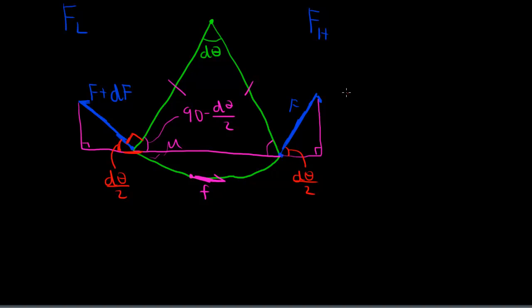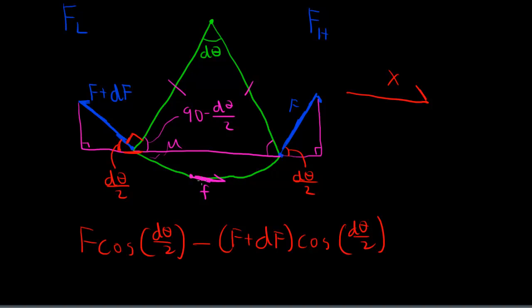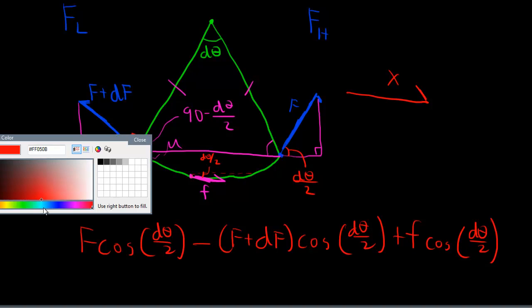If we make this way the positive x direction, this force is pushing in the positive direction. So we get f cosine dθ over 2, and this force is pushing in this direction, so that's minus f plus df cosine dθ over 2. And this force of friction is also just in the x direction. It's physically paining me to continue to write these cosine dθ over 2s, and let me explain why we can just ignore all of these.